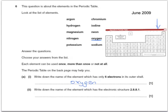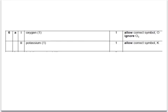Write down the name of an element with the electronic structure 2,8,8,1. There are a couple of ways we could do that. First of all, it's got 4 shells, so it's in period 4, and it's in group 1 because it's got 1 outer electron — so that must be potassium. Alternatively, we can add up the total number of electrons, which comes to 19. Because the number of electrons in a neutral atom is the same as the number of protons, we look for the one with the proton number of 19, which is potassium. Those are our answers.